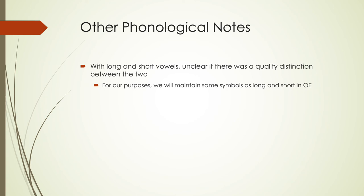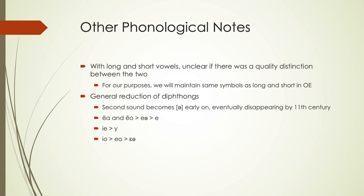There was also a general reduction of diphthongs during this time period. In the major diphthongs EA and EO, very early on they become EA with a schwa — even though schwa isn't really a vowel in the system, it's already becoming a little lazier and then eventually drops by the beginning of Middle English. A few other less frequent diphthongs not in the chart: IE became I, and IO very quickly became EO, which became EA, and then would have undergone those same kinds of changes as the other diphthongs.